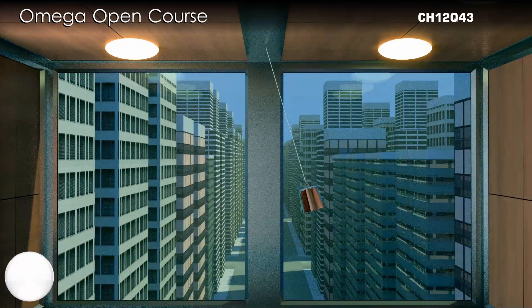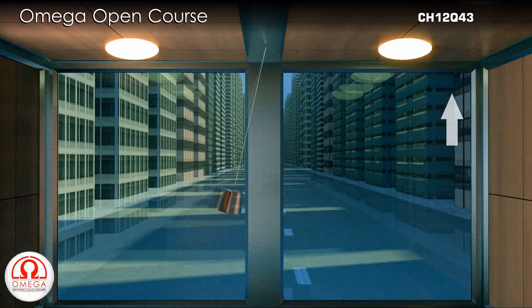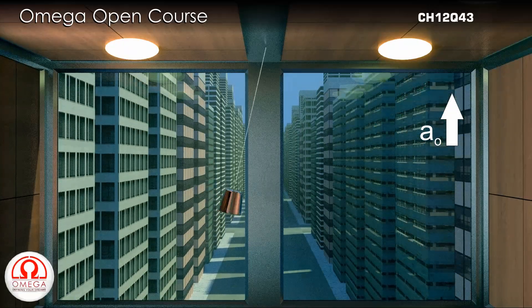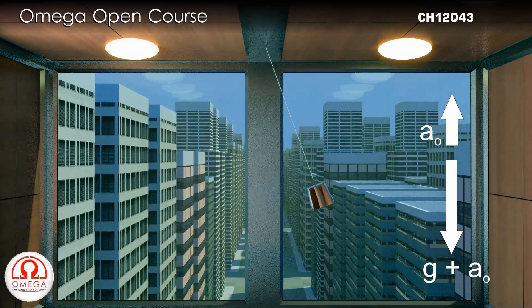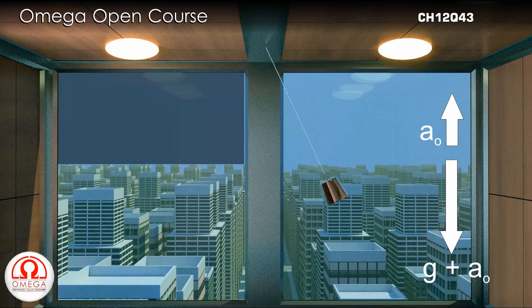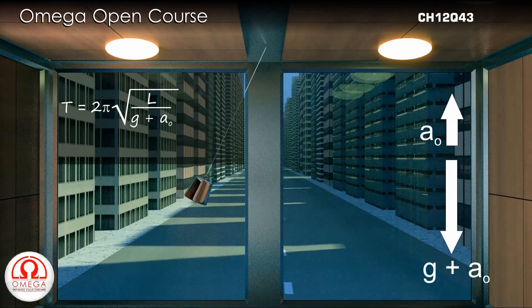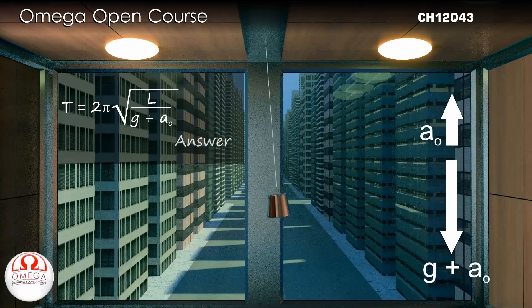As is discussed in the video on equivalent gravity, when the elevator is moving up with acceleration A0, the effective acceleration due to gravity in the frame of the elevator is g plus A0. Therefore, the time period of this simple oscillation in this frame is 2π√(L/(g+A0)). This is answer to part A of the question.